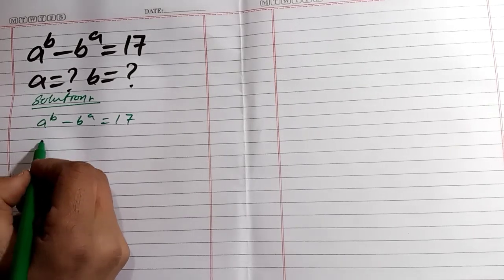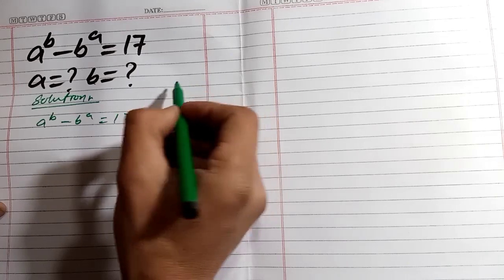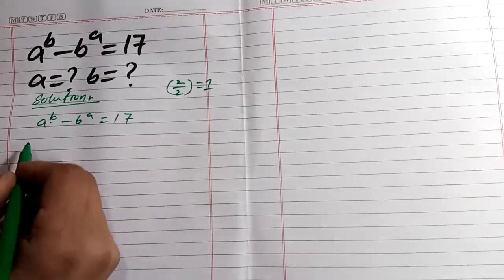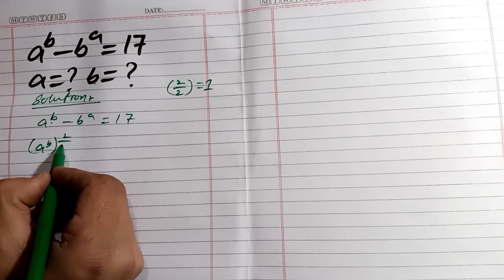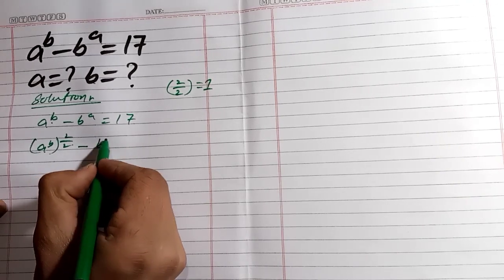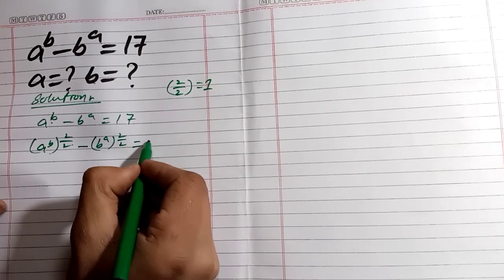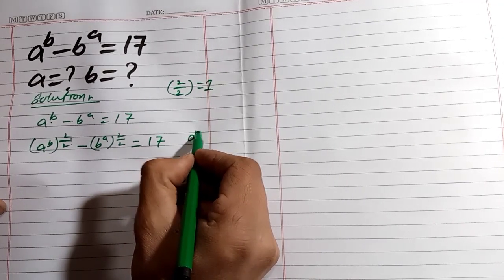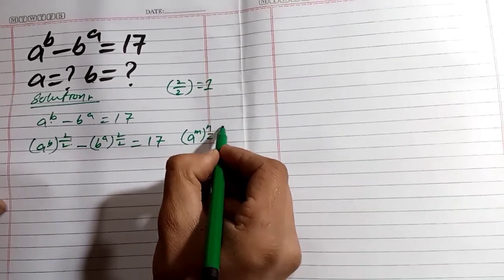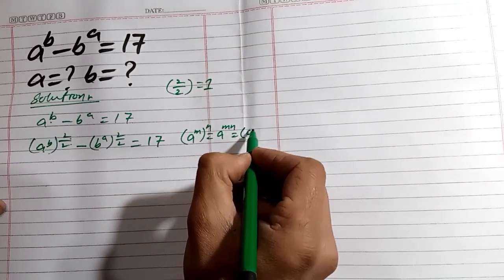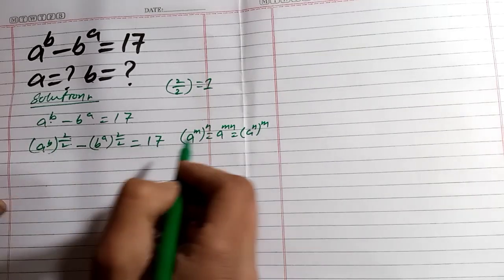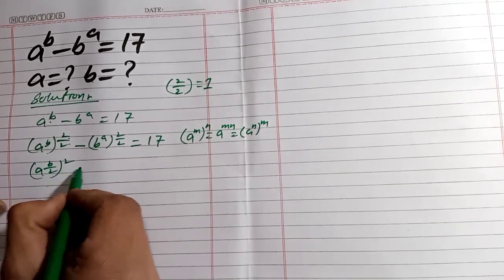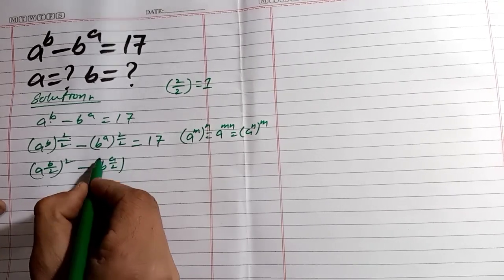First of all, we can rewrite this equation. As we know, any number divided by itself equals 1, so we can write a^b as a^(b/2 · 2) and b^a as b^(a/2 · 2). Using the exponent rule a^(mn) = (a^m)^n, we rewrite each term: a^(b/2) squared minus b^(a/2) squared, which equals 17.